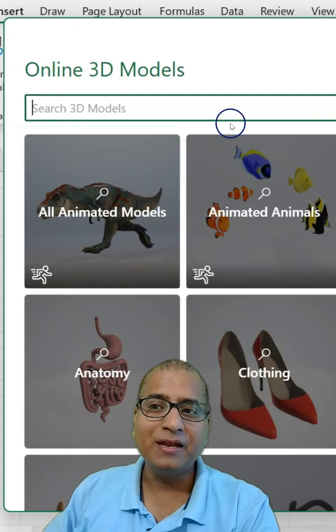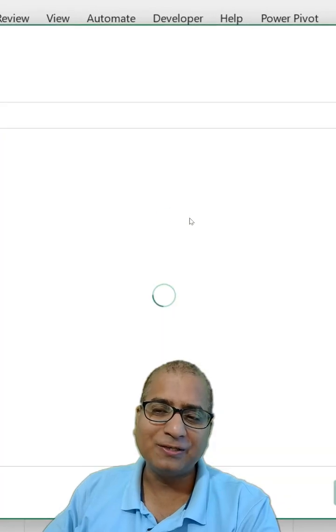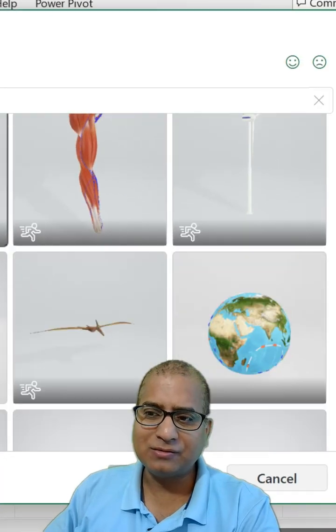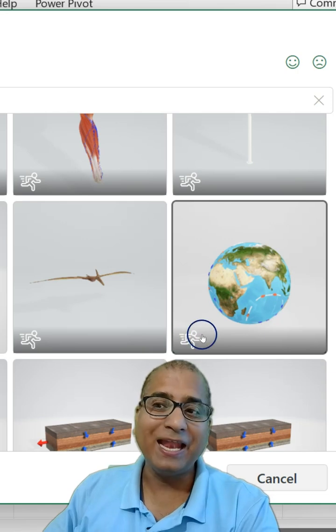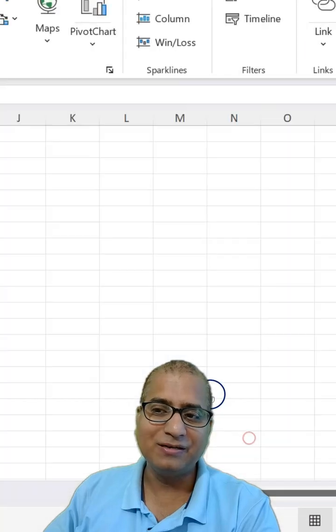For example, we need earth model. It should be part of Education. Let's check—here we have it. You see this icon that means it is an animated model. So click on it, insert.